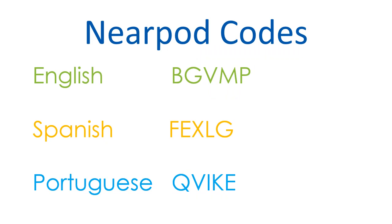Okay boys and girls, now it's your turn. Once you feel comfortable with line plots, go over to Nearpod.com and put in the code that applies to you. For English, it's B-G-V-M-P. Para Español, F-E-X-L-G. Y para Português, Q-V-I-K-E. And don't forget, you can text me, email me, or call me if you have any questions or get stuck along the way. Also, don't forget to like the video and subscribe to my channel. See you tomorrow.